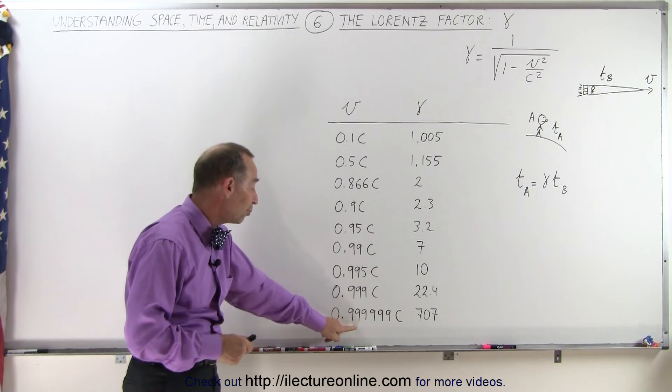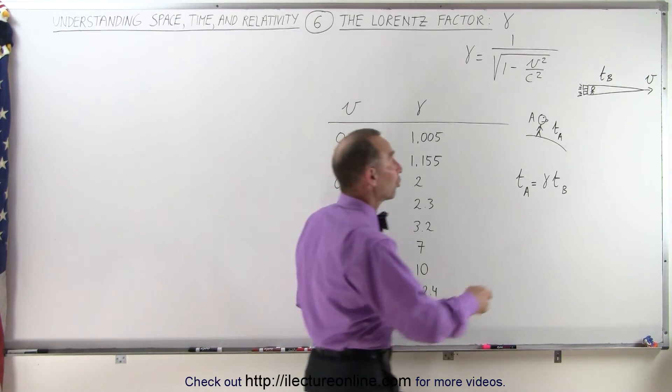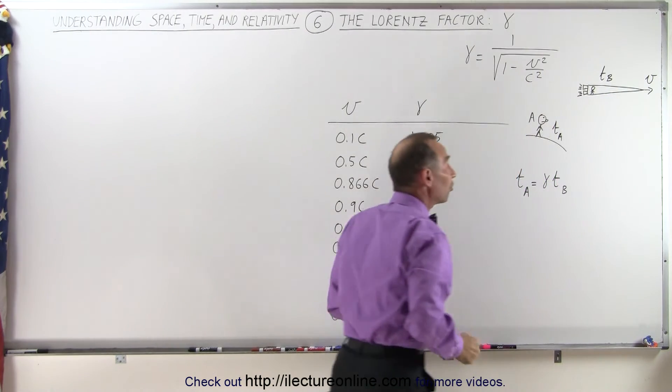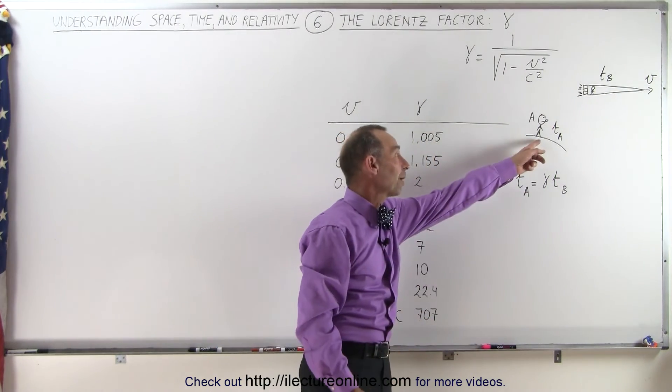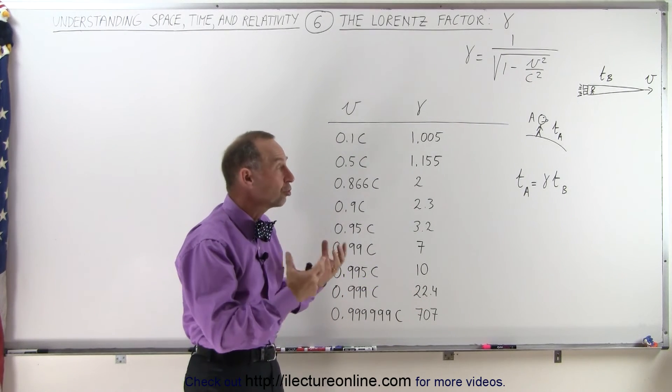This means if the object is moving this fast, and the time measured by observer B moving along with the experiment is 1 second, the time measured by observer A would be 707 seconds. That's a huge difference.